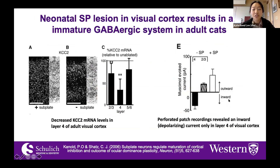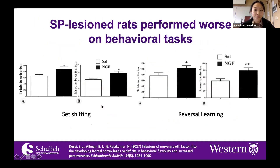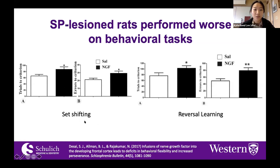Essentially, what the study found was that in adults the GABAergic system was remaining immature. Previously, my lab had also looked at these animals and done several behavioral tasks, and we have seen that the NGF-lesioned or subplate-lesioned animals performed worse on several behavioral tasks related to focus and traditionally related to schizophrenia behavioral models.